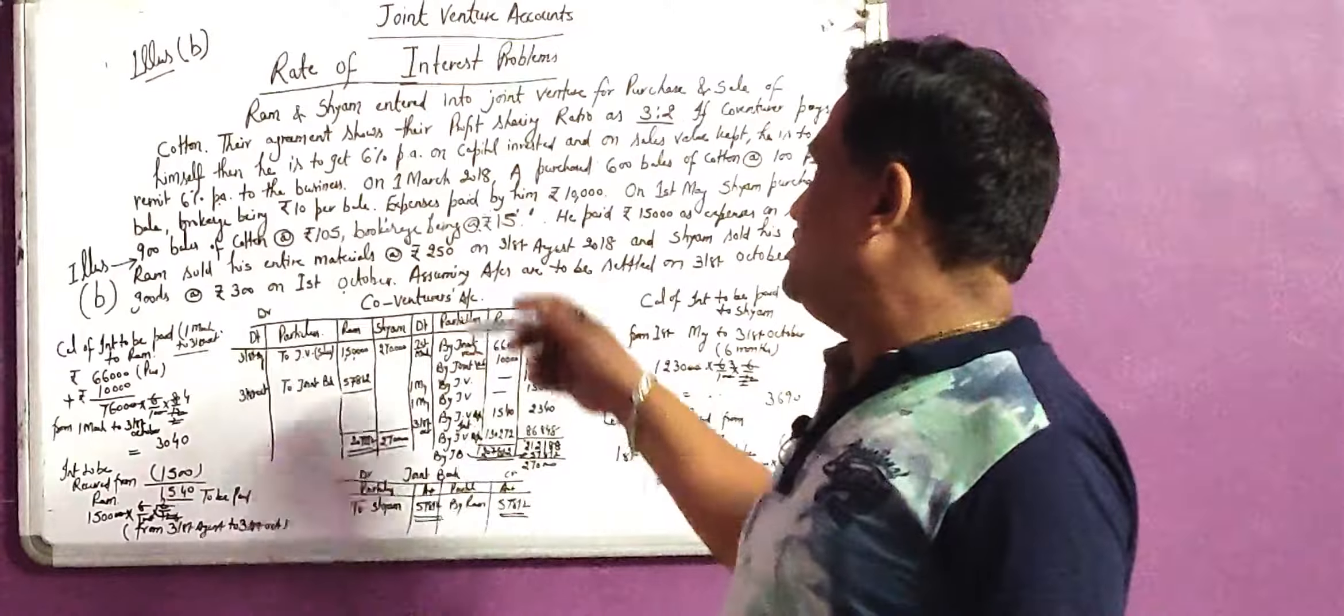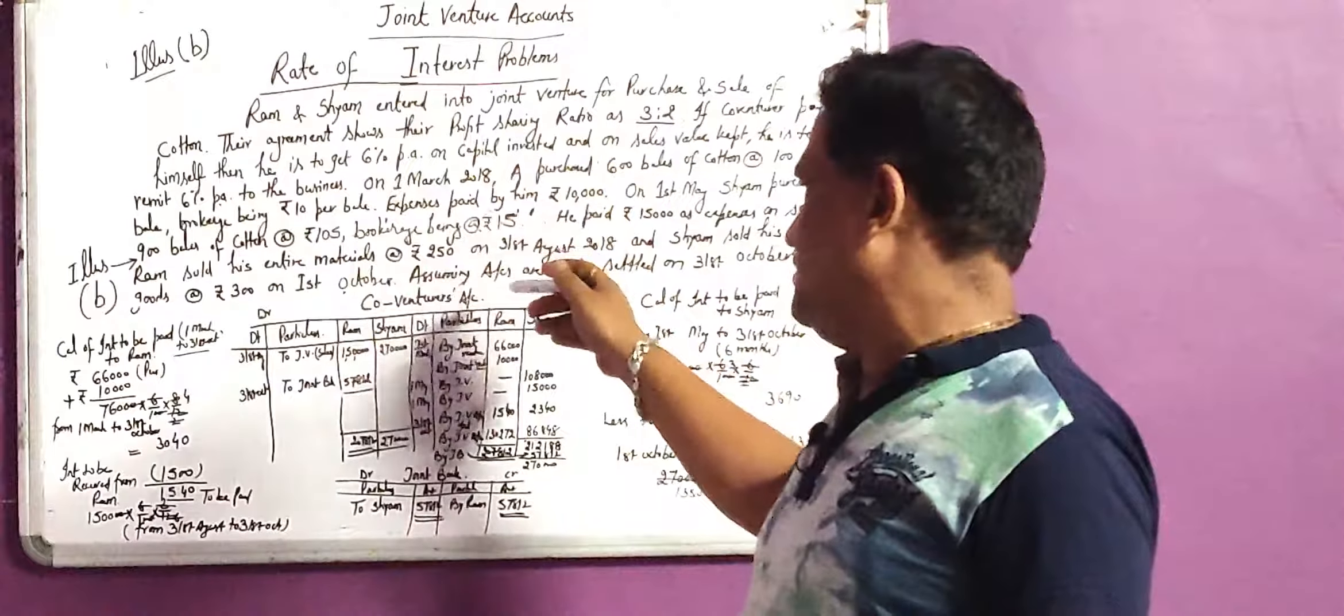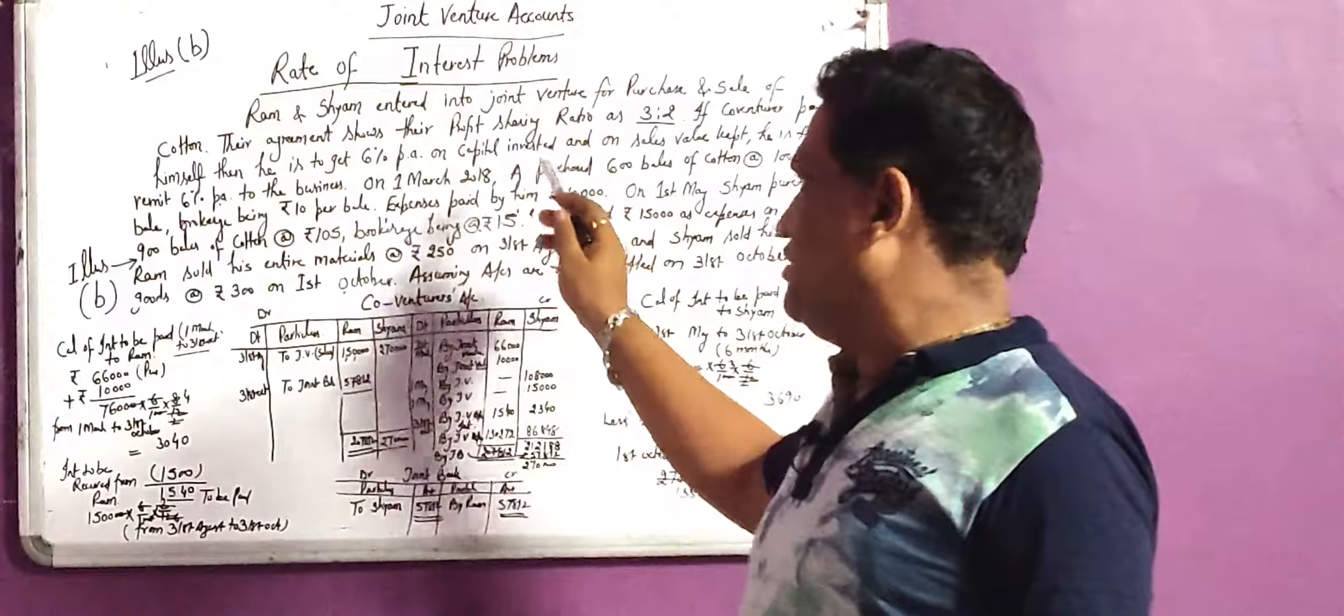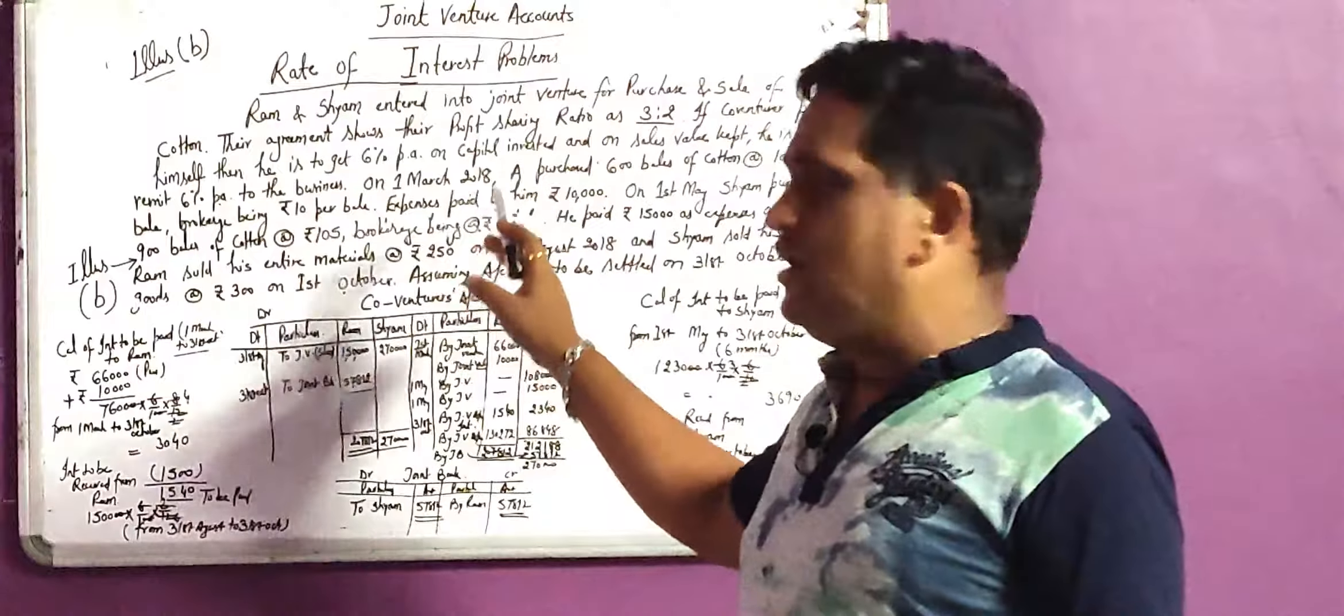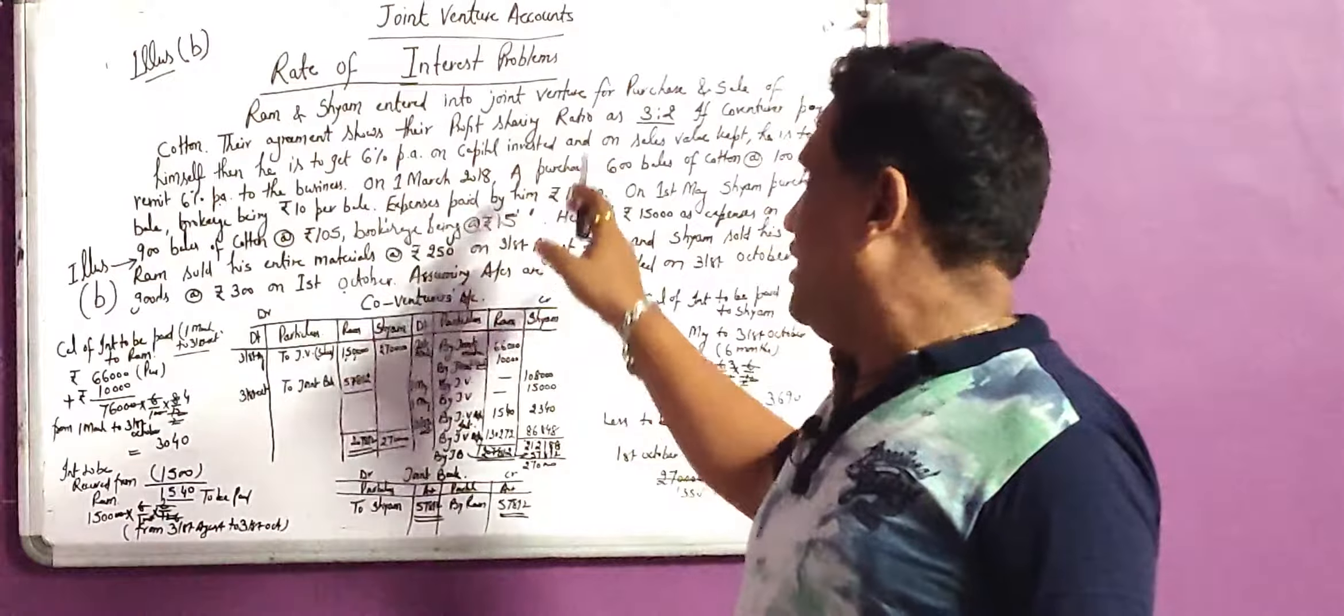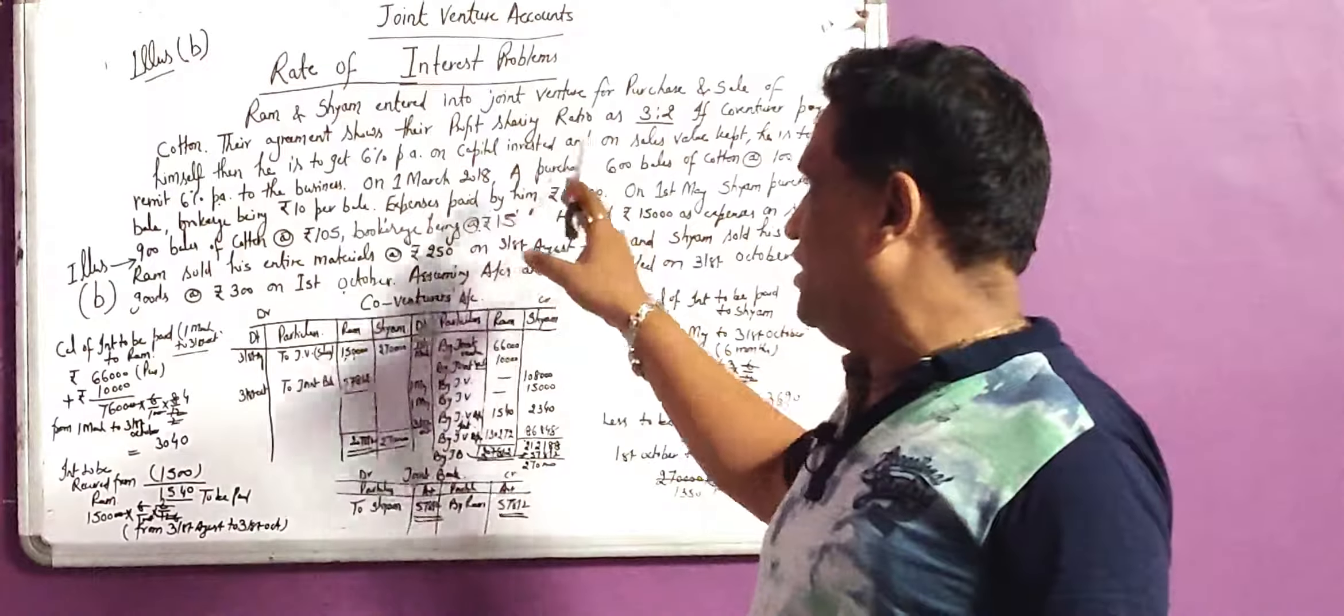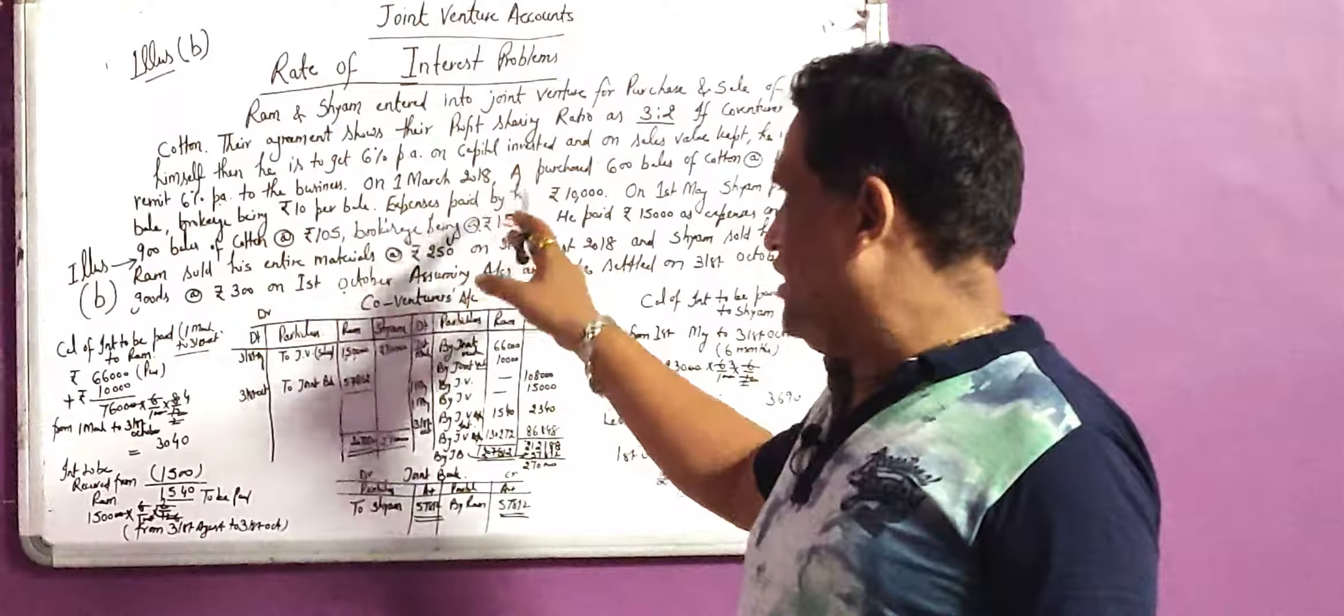Now in this case we have one solved illustration that was related to joint venture account and we have calculated profit regarding the rate of interest and we have solved the problem in the last lecture we discussed.